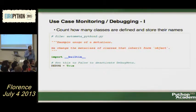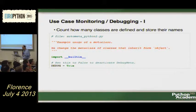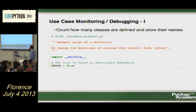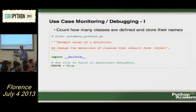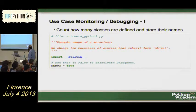Let's look at some code — I tried to make a simple example that makes a point. We use it for monitoring and debugging. Our case is very easy: we just want to count how many classes are actually defined in your code and how many are imported. We import a built-in module here, and you see we set debug to true — we have a switch. If you set debug to false, nothing happens; if you set it to true, things change.